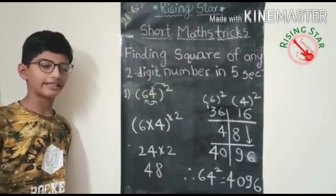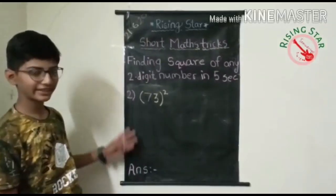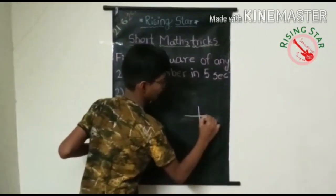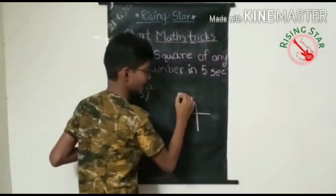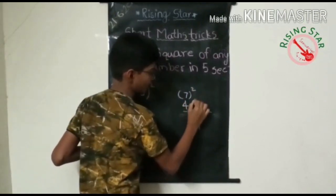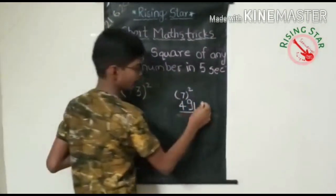Now let us take another example. Let's begin with the second example, seventy-three. So first of all, draw two lines and now write seven square here, that is forty-nine, and now write three square here, that is nine.